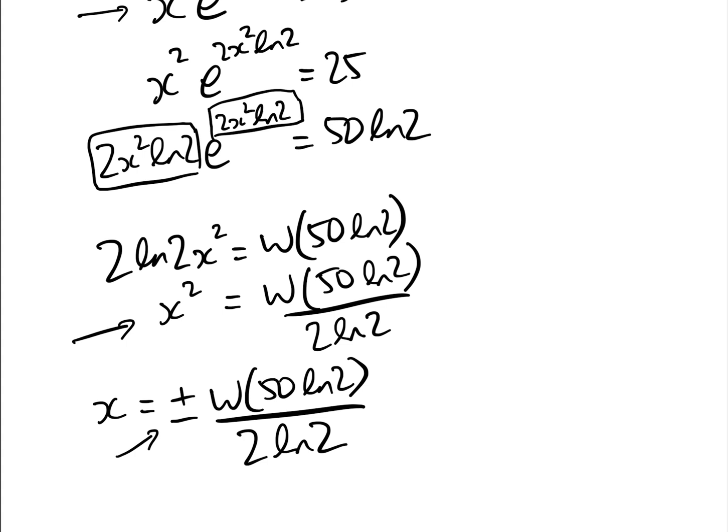This is where the extraneous solution comes in. Because we squared and then took the square root, we introduced this negative solution, which doesn't actually fit the original equation. As we've already discussed, we can get rid of that one and only take the positive root.